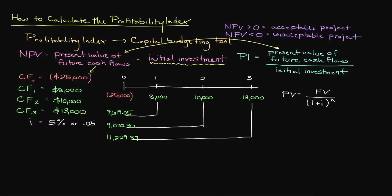However, with the profitability index, we actually divide our present value of future cash flows, which is $27,919.24, by our initial investment of $25,000. This gives us a profitability index of 1.12 after rounding to the nearest hundredth.